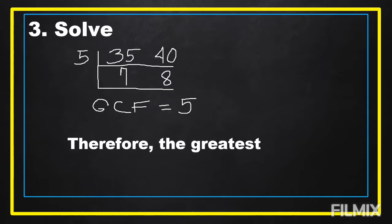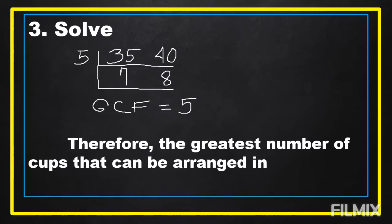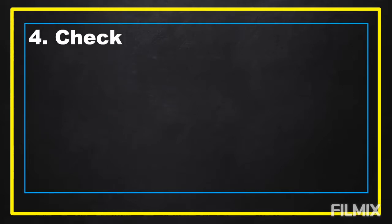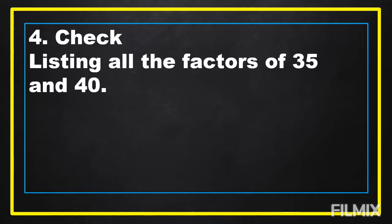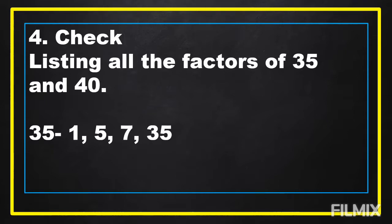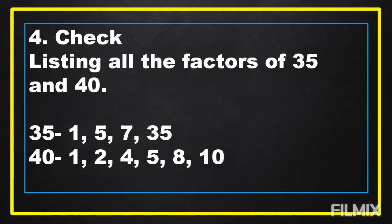Therefore, the greatest number of cups that can be arranged in one row is 5. The last step in solving a word problem is we're going to check or look back. In our problem, we're going to check by listing all the factors of 35 and 40. The factors of 35 are 1, 5, 7, and 35. The factors of 40 are 1, 2, 4, 5, 8, 10, 20, and 40. Then we're going to get the greatest common factor. The common factor of 35 and 40 is equal to 5. So we got the correct answer.